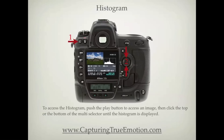To access the histogram, push the play button to access an image, then click the top or the bottom of the multi-selector until the histogram is displayed.